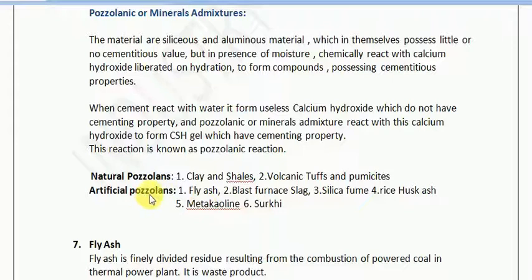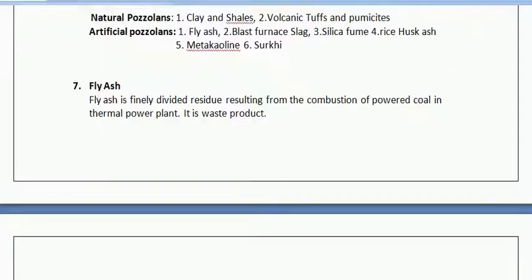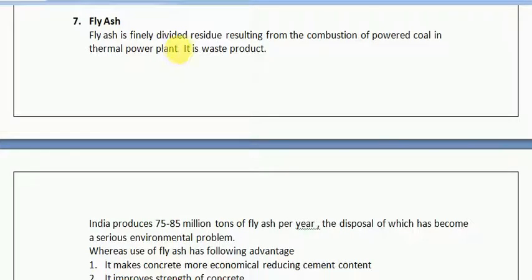We will understand artificial pozzolana in greater detail because this is the golden ingredient in concrete which is of low or no cost and also converts waste products into useful products. When we practice civil engineering, we must target to use this material as much as possible as it can save thousands or lakhs of rupees for your company. Fly ash is the finely divided residue resulting from the combustion of powdered coal in a thermal power plant — it is a waste product.